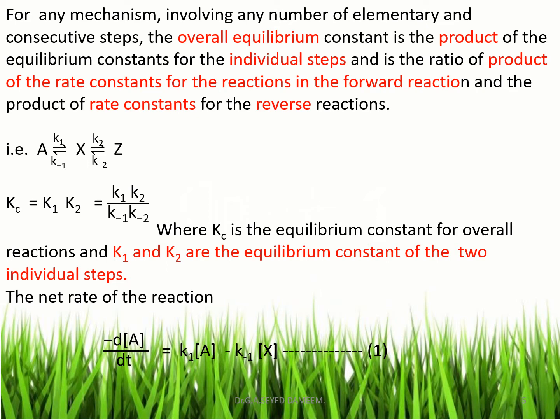Now consider the reaction A ⇌ X ⇌ Z, which consists of two reversible reactions. For A ⇌ X, the rate constant of the forward reaction is K1 and that of the backward reaction is K-1. For X ⇌ Z, the rate constant is K2 for the forward reaction and K-2 for the backward reaction. The overall equilibrium constant Kc is the product of the equilibrium constants for the first and second reversible reactions, K1 and K2 respectively.